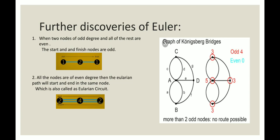The second law of Euler was all the nodes are even degree then the Eulerian path will start and end in the same node which is also called Eulerian circuit. Let's look at the example in the image. It starts in the first two and completes in the first two which is all even number of nodes. So this is the second law driven by Euler.